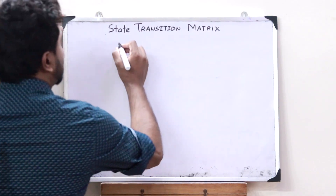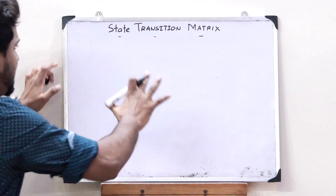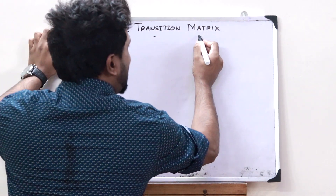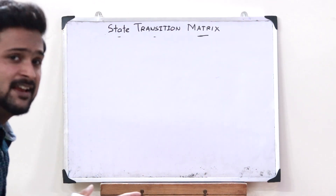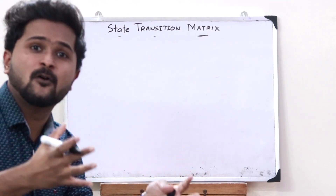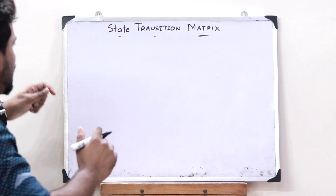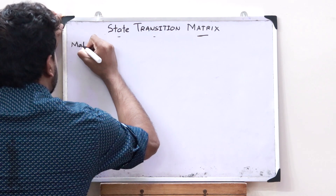What do I actually mean by the term state transition matrix? A state transition matrix is simply a particular matrix that satisfies a linear homogeneous state equation. This is a matrix that satisfies a linear homogeneous state equation.